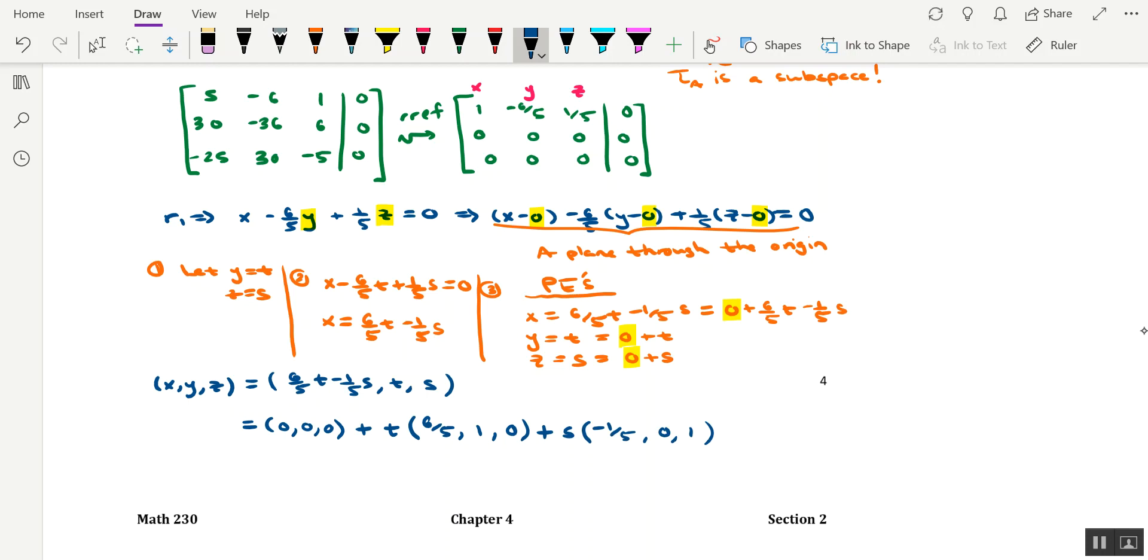And this is the vector form for the equation of a plane. Namely, the equation of a plane that's going through the origin. So, either way you slice it, the solution space is a plane through the origin. If you have any questions regarding anything from this video, feel free to let me know. Otherwise, I'll catch you in the next one. Thanks for watching.